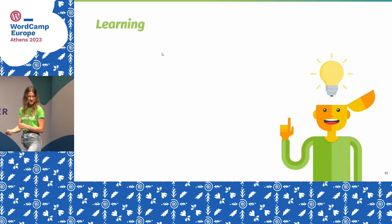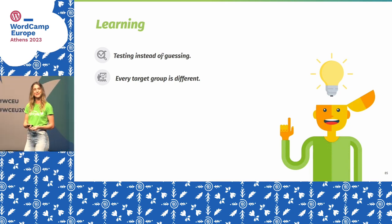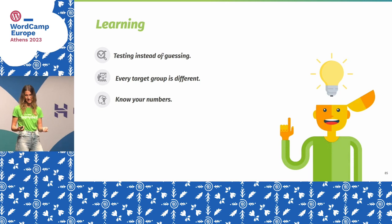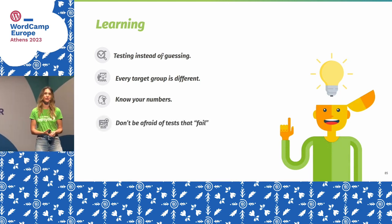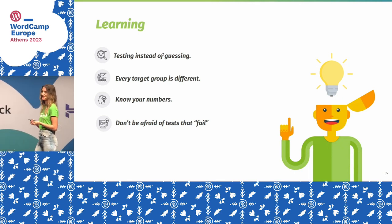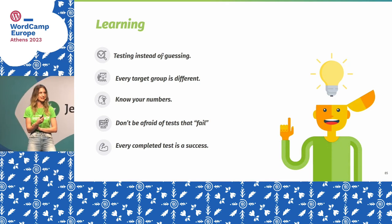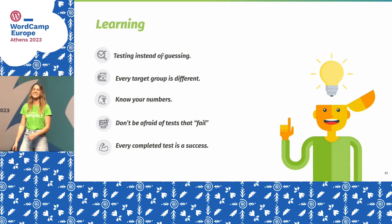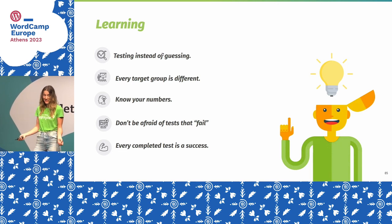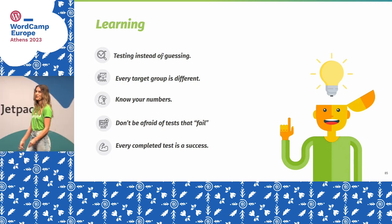The key learnings are: test instead of guess; remember every target group is different; know your numbers — that's very important if you want to test significantly. And don't be afraid to fail tests, because there is no failing when you test — every test is a win and a learning. Every completed test is a success. We celebrated every finished test, even when numbers weren't better or were worse. It helped us make decisions.